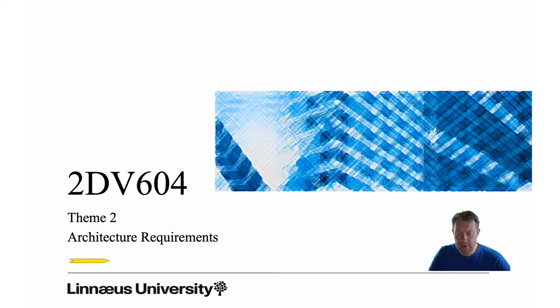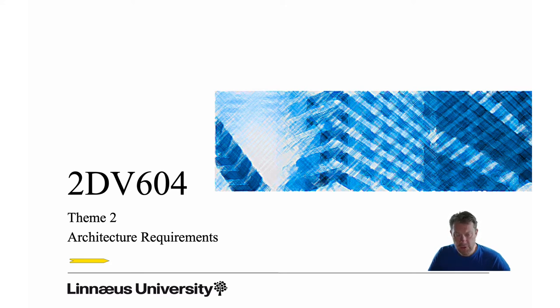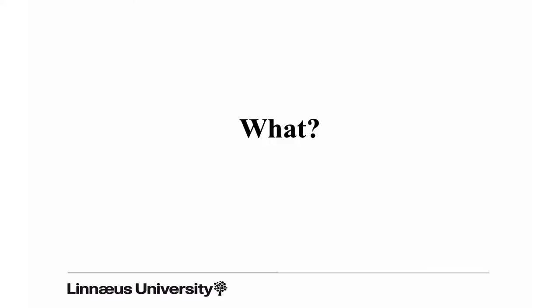Welcome to the second theme in the 2DB604 Software Architecture course. This theme is all about architecture requirements. The first lecture is a general lecture introducing what architecture requirements are, and then in a second lecture we look more into a specification technique for architecture requirements called quality attribute scenarios.